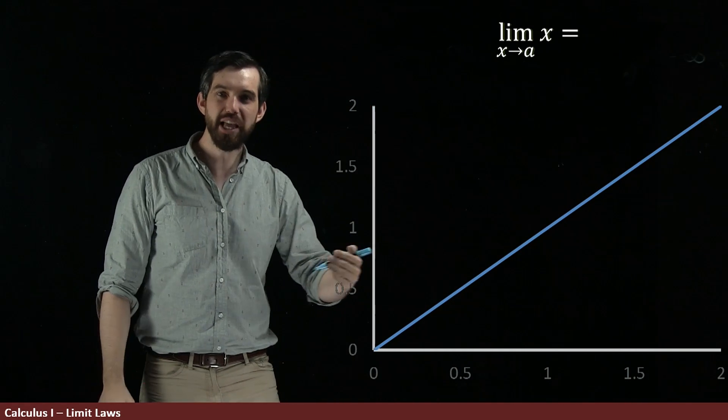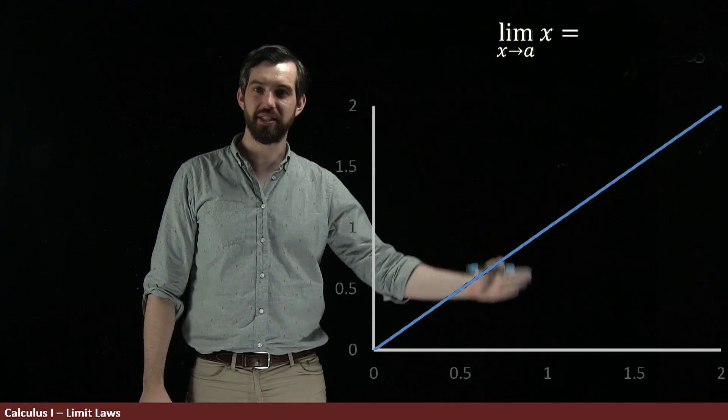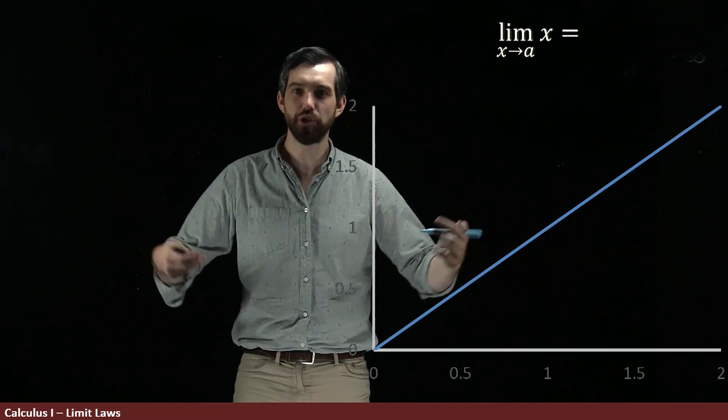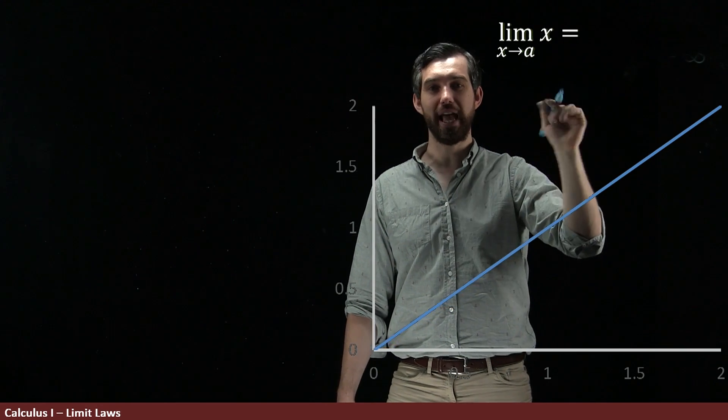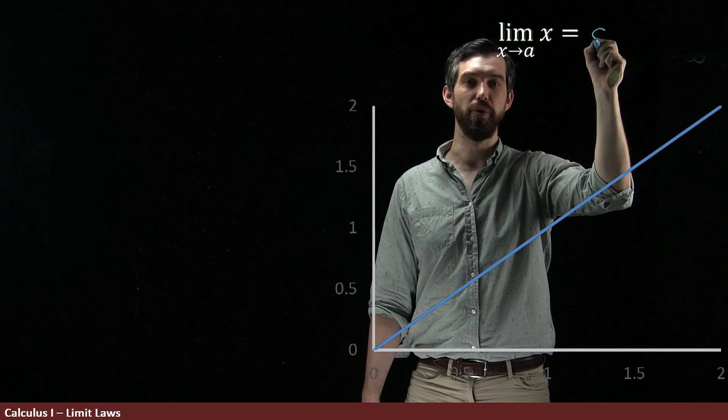So, as we get close to any point a, because it's just this straight line, the height of it is going to be a. And so, the limit of the function x, as the variable x goes to a, is just going to be equal to a.